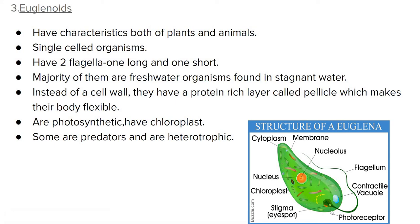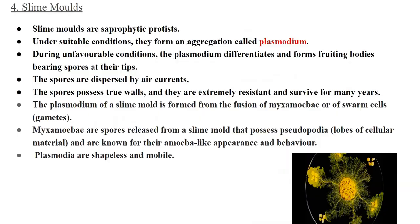Euglenoids are a category of Protista with similarities both towards kingdom Plantae and kingdom Animalia. They are single-celled organisms, mostly freshwater, with two flagella — one long and one short. They have a cell covering made of pellicle, making them flexible. They possess chloroplasts so they can do photosynthesis and are autotrophic, but some members of this group are heterotrophic, living as predators.